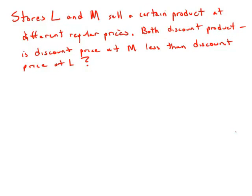Stores L and M each sell a certain product at a different regular price. If both stores discount the regular price of their product, is the discounted price at store M less than the discounted price at store L? So I'm going to use the variables L and M to denote the prices before discount.